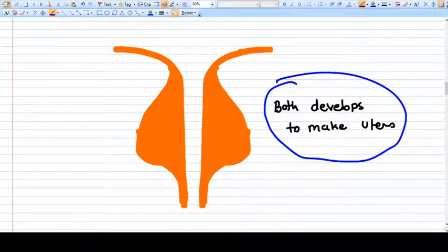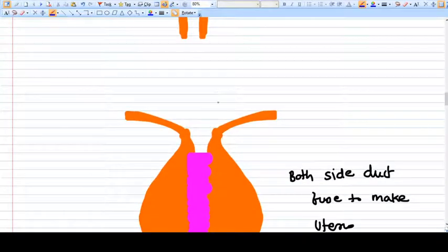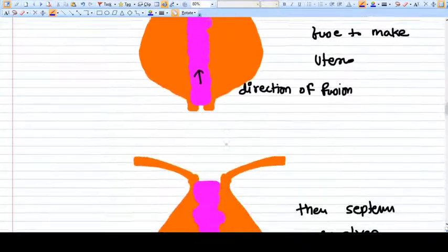This duct will grow and develop into uterus ipsilaterally. As you can see here, the half of the uterus is made by one side of mullerian duct and the half of the uterus is made by another side of mullerian duct. This is the first half, this is the second half. Now both halves will join together.